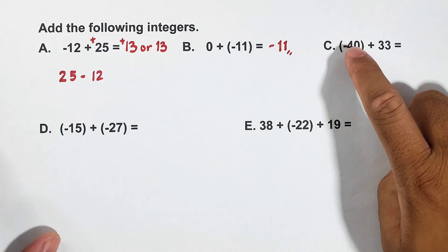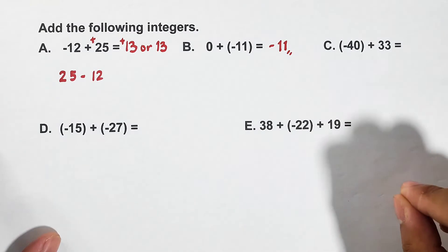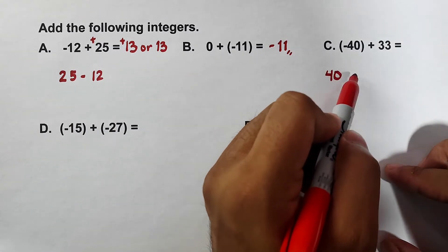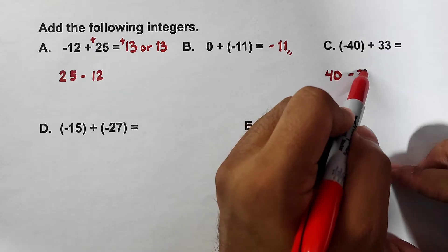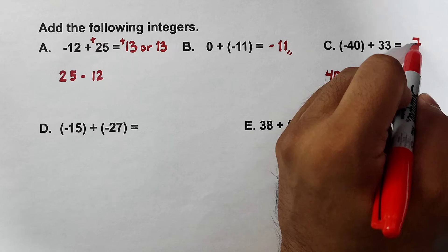Let's move on with item letter C. For letter C, negative 40 plus 33. Different signs? Subtract. So in our mind, let's take the 40 minus 33. What is the answer? The answer is 7.